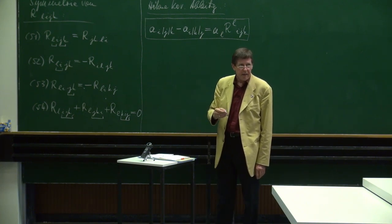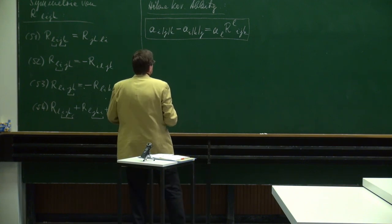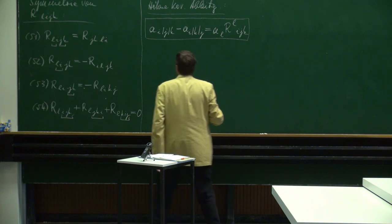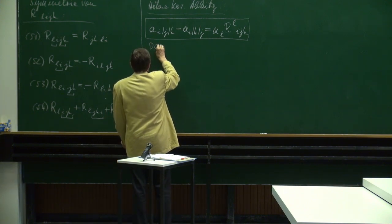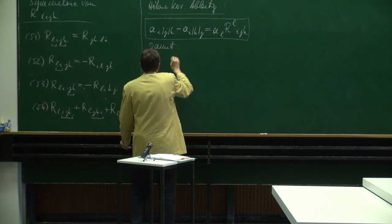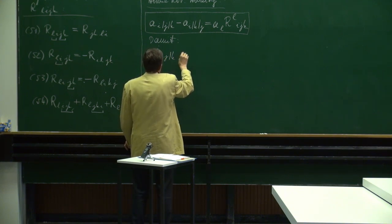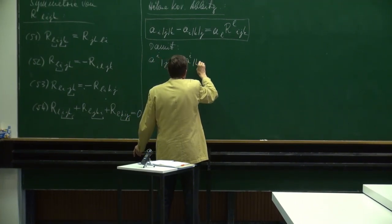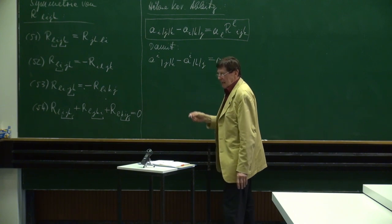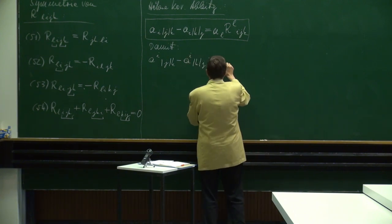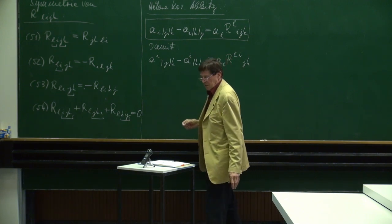Also der Riemannsche Krümmungstensor eignet sich dazu, die Differenz dieser Kovarianten Ableitungen auszurechnen. Jetzt schauen wir uns noch an, wie das dann ausschaut, wenn man einen kontravarianten Tensor erster Stufe betrachtet. Da handelt man sich ein Minus ein. Wenn wir den Index I überall hinaufziehen - das geht durch einen entsprechenden kontravarianten Metriktensor - dann erhalten wir A^I nach J nach K minus A^I nach K nach J gleich A^L mal R_{L}^{IJK}.